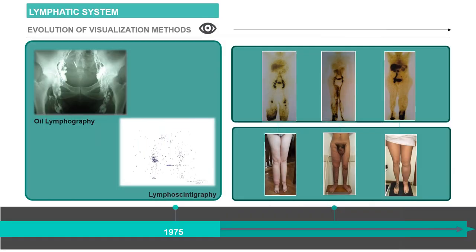Regarding the evolution of visualization methods, you can see a picture of an oil lymphography. These methods have long been the choice for imaging the lymphatic system, first described by John Kim in the 1960s. Today we still perform it in some special cases. This method declined with the introduction of lymphoscintigraphy.